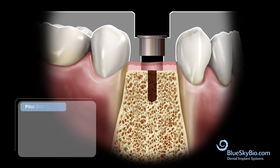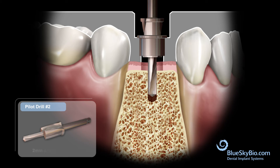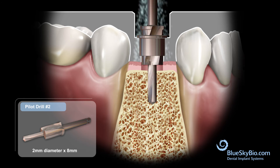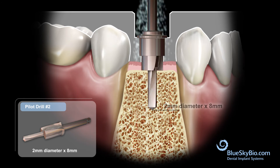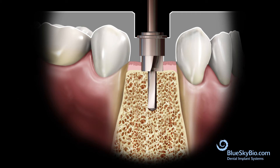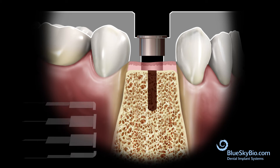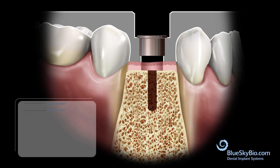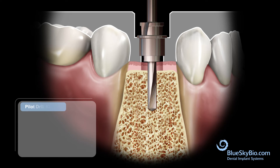Insert the 2 by 8 millimeter drill without spinning until it advances to the depth created by the previous drill. Activate the drill and advance until stopped by the master tube. Then insert the 2 by 10 millimeter long drill without spinning until it reaches the depth of the osteotomy.